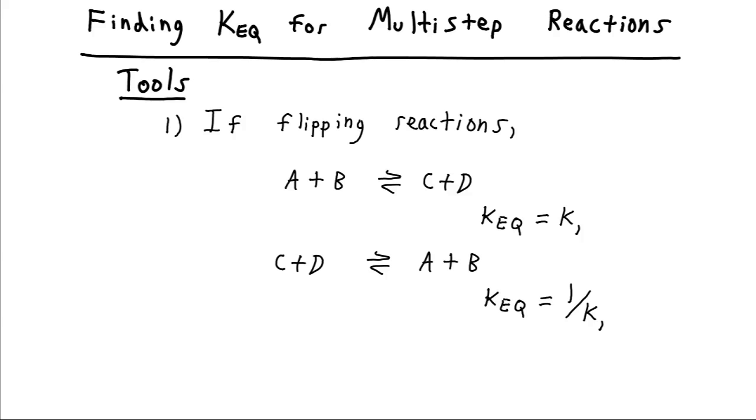Our first tool is that if we have a reaction for which we know the equilibrium constant and we decide we want to flip that reaction so that the products now occur on the reactant side and vice versa, the new equilibrium constant will be the reciprocal, one divided by the previous equilibrium constant.